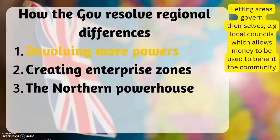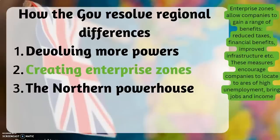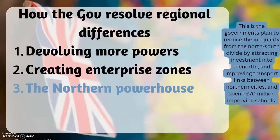How did the government resolve regional differences? The first method is devolving more powers, which means letting areas govern themselves. For example, using local councils, which allows money to be used to benefit the community. Second, creating enterprise zones. Enterprise zones allow companies to gain a range of benefits, such as reduced taxes, financial benefits, and improved infrastructure. These measures encourage companies to locate to areas of high unemployment to bring jobs and income in. The Northern Powerhouse is the government's plan to reduce inequality from the North-South divide by attracting investment into the north, improving transport links between northern cities, and spending £70 million improving northern schools.